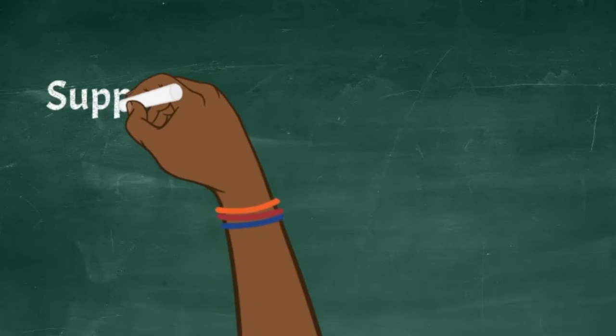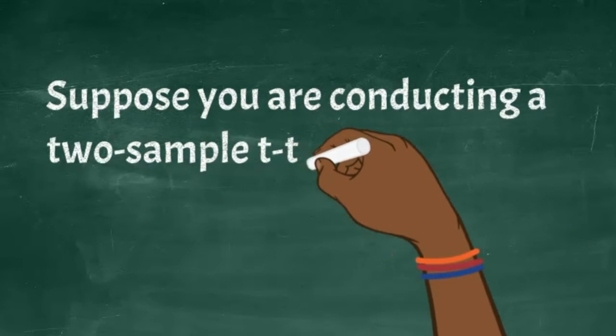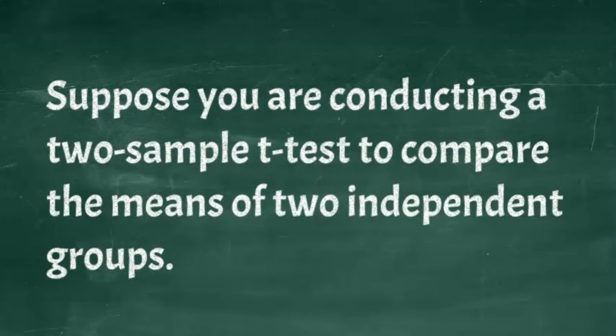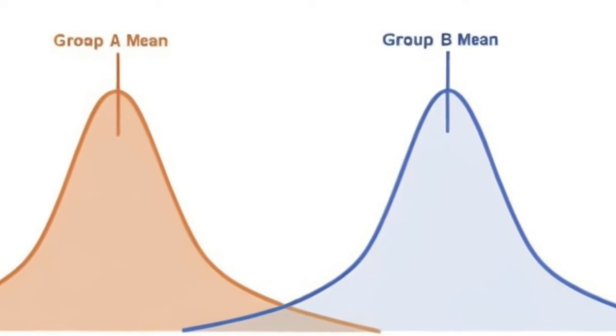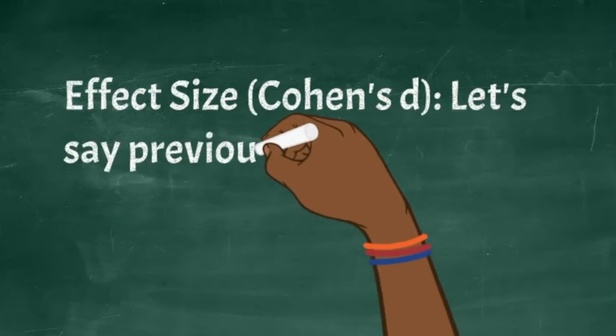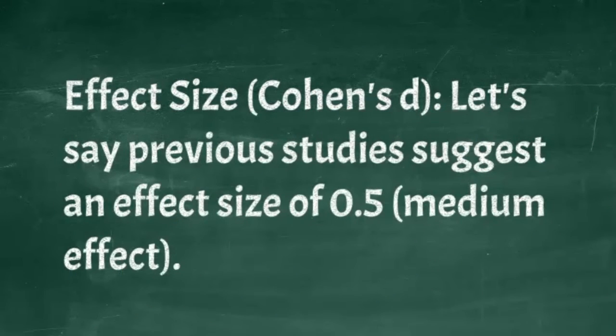So looking at this example, suppose you are conducting a two-sample t-test, you want to compare the means of two independent groups. So the first thing is to decide what your effect size is, and you can use Cohen's D, and let's say that the studies suggest an effect size of 0.5, which is a medium effect.